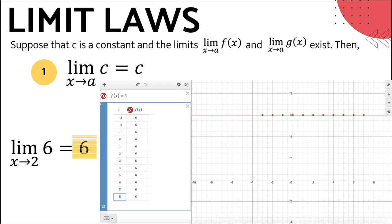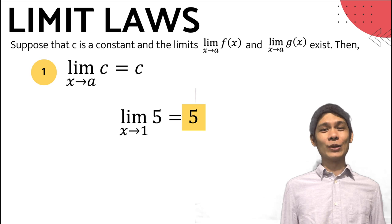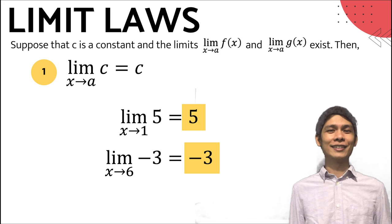So let me state again the first law: the limit of a constant as x approaches any number a is the constant itself. Let's have more examples. The limit of 5 as x approaches 1 is equal to 5, and the limit of negative 3 as x approaches 6 is equal to negative 3.